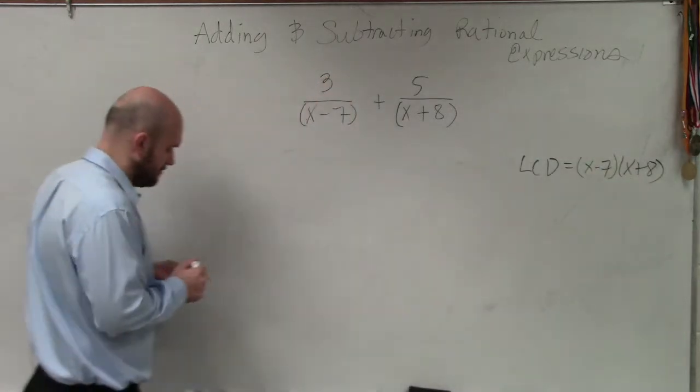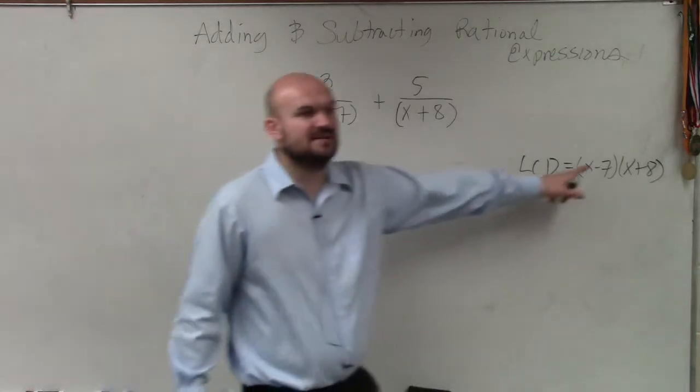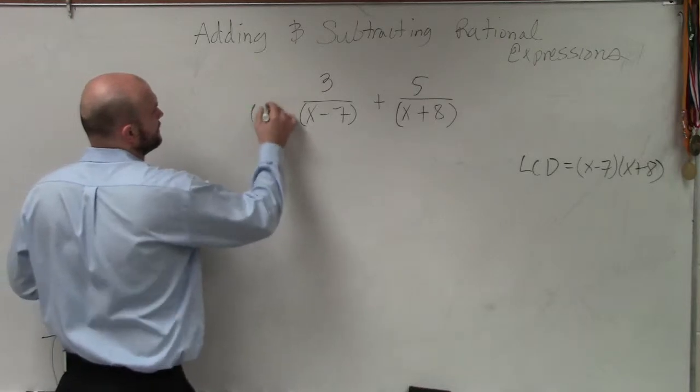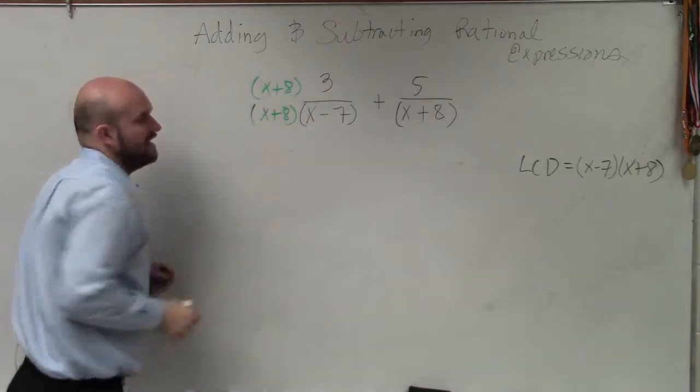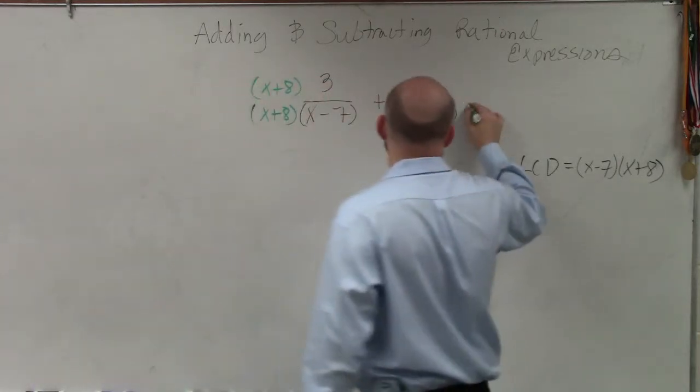So now, what I'm going to do is, to get x minus 7 so it's x minus 7 times x minus 8, I'm going to have to multiply it by x plus 8. To get x plus 8 to look like x plus 8 times x minus 7, I have to multiply it by x minus 7.